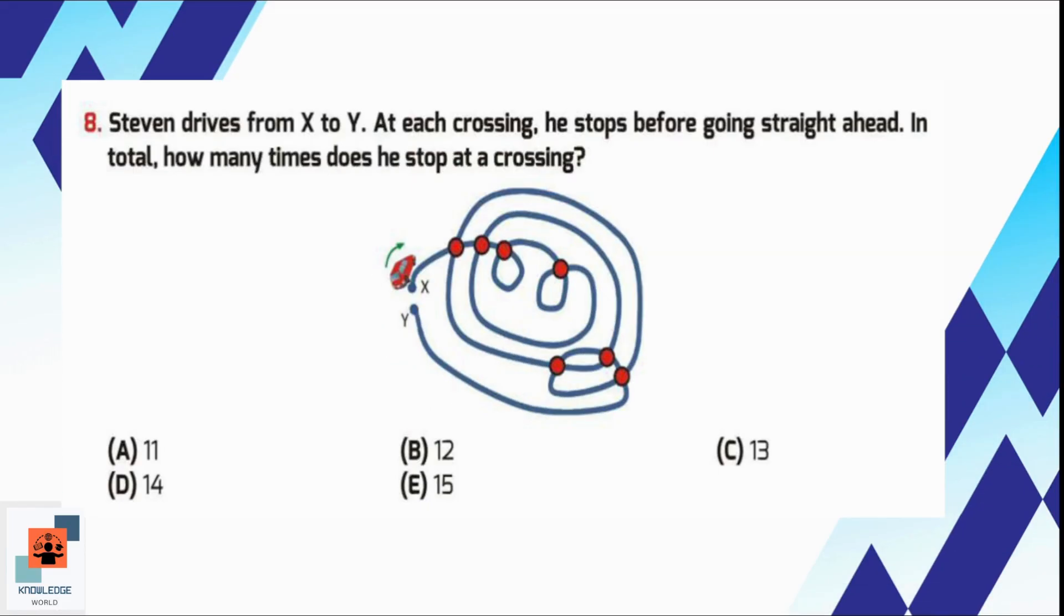Question number 8, Stephen drives from X to Y. At each crossing he stops before going straight ahead. In total, how many times does he stop at a crossing?